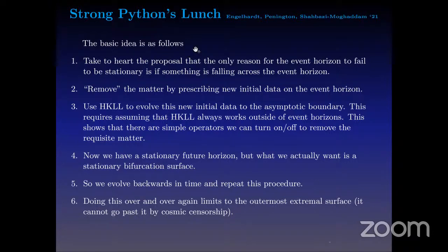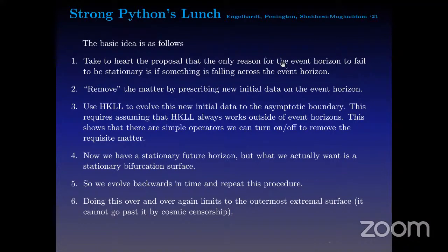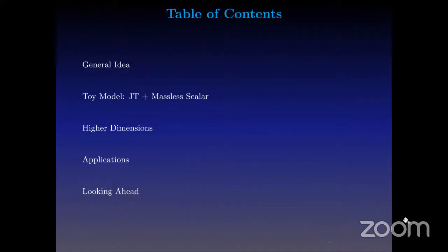Question: Just to make sure I understand — the reason why your prescription does not contradict the Preskill-Hayden protocol is that they want to reconstruct the information from the emitted radiation, whereas you just reconstruct it from the evolution of the horizon, right? Well, first of all, this is purely classical. So there's no radiation in the system just yet. I'll begin to comment a bit on what happens when we add quantum corrections later on — I think things do change.